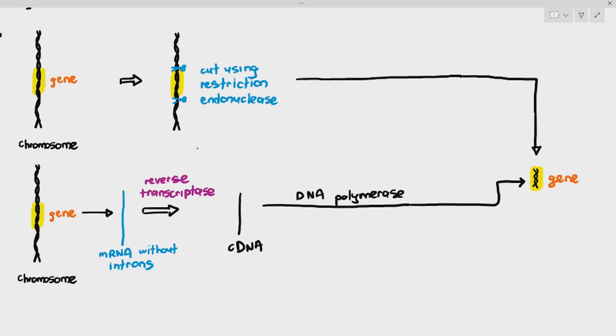Or, the third easiest way is if you know the sequence of the gene, you feed the information into a DNA synthesizer machine and the DNA synthesizer machine will artificially synthesize the gene that you want. So, these are the three ways that we can obtain the gene that we want from the organism.